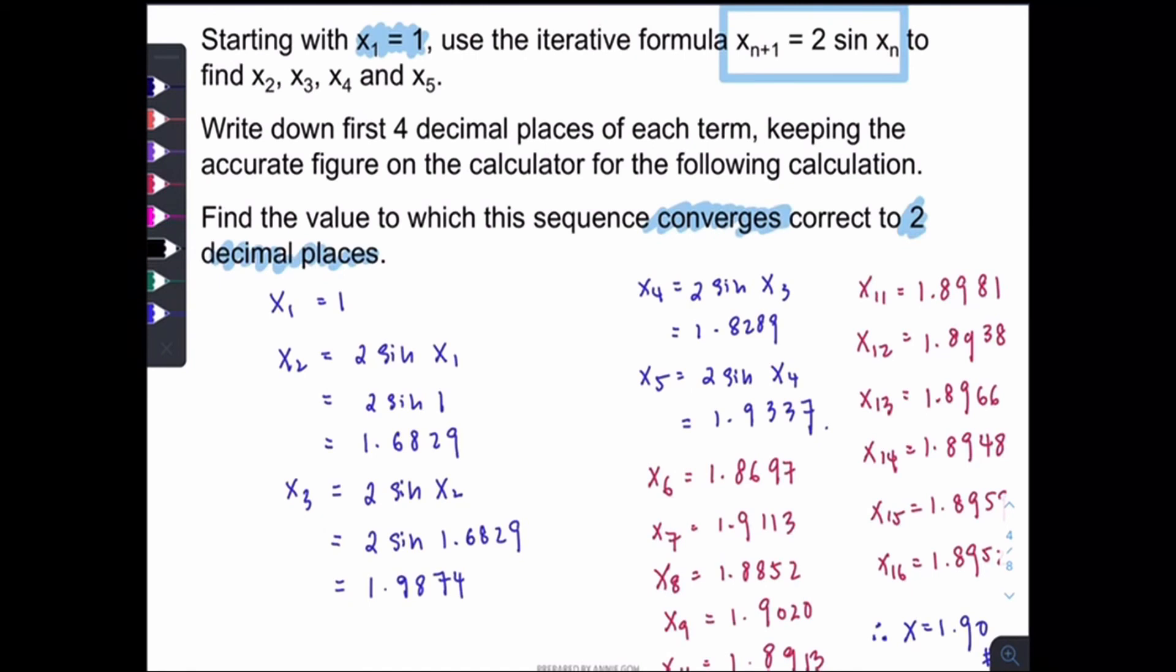There's one tip here on how to get the answer quickly. Like how to get the x6, x7, x8, x9 in just by clicking one button. Instead of every time when you want to find the values, you have to sub the previous answer into here and type again in your calculator. It's a waste of time.